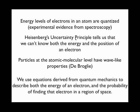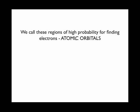We use the equations derived from wave mechanics or quantum mechanics to describe both the energy of an electron, and instead of exactly where that electron will be found, we describe the probability of finding that electron in a specific region of space. We call these regions of high probability atomic orbitals.